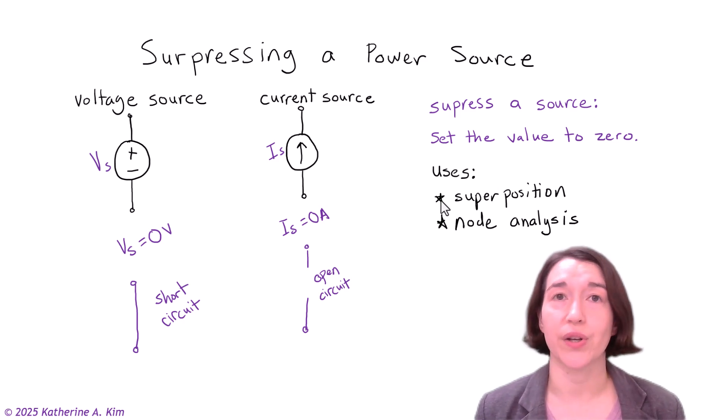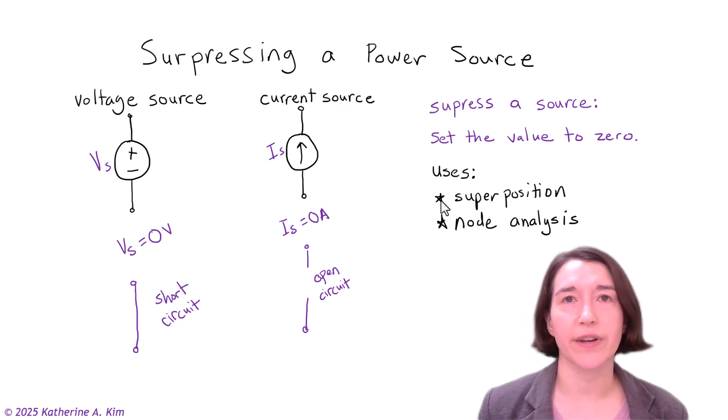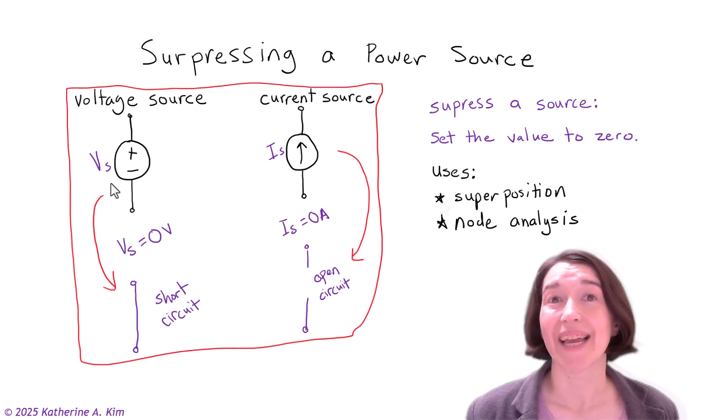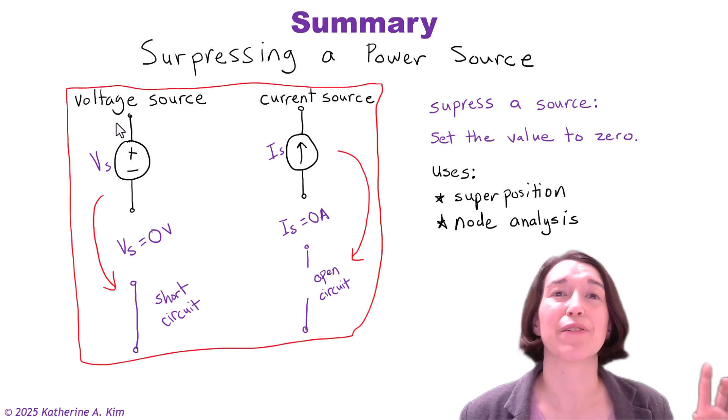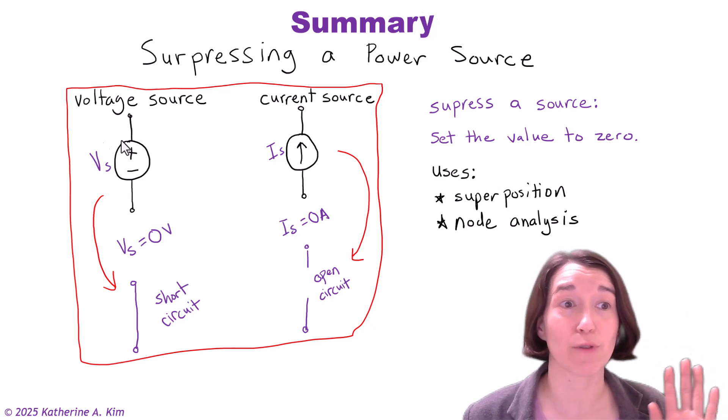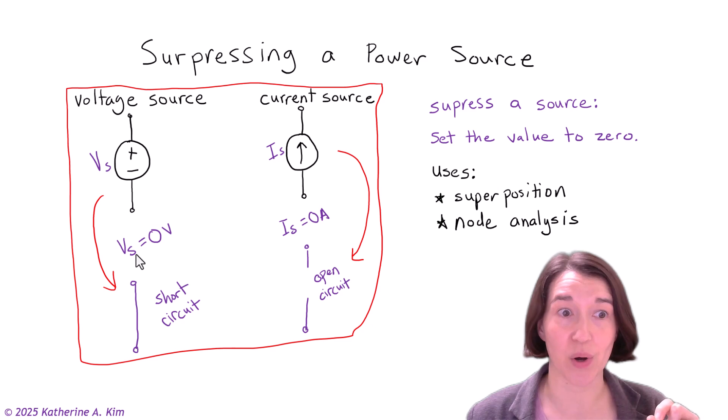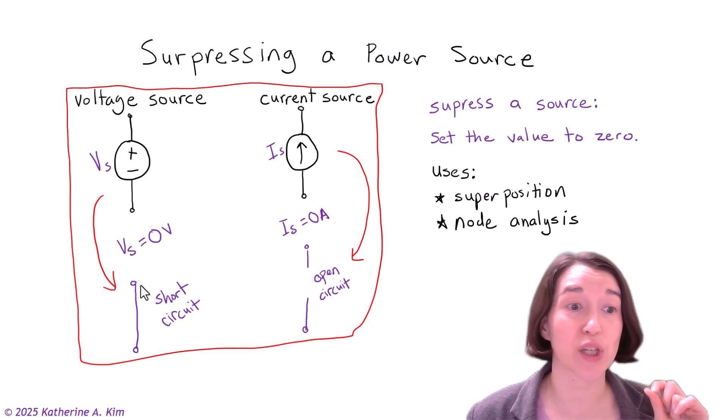Another time we can use this is for node analysis, when we're trying to figure out how many nodes we have and how many are unknown. And source suppression is a technique to help you identify that. In summary, if you want to suppress a voltage source, you set its voltage value to zero, which is equivalent to a short circuit between the terminals.